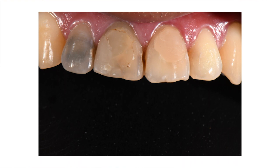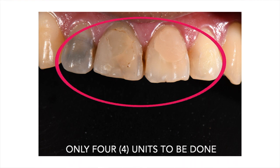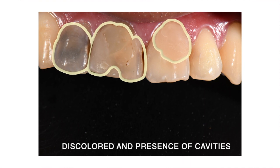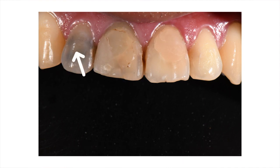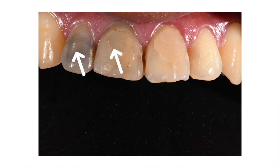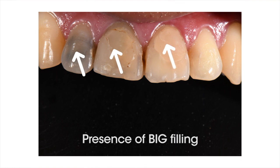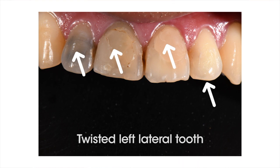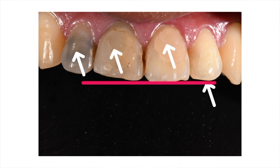We are only doing four units for this case. As you can see, it is super discolored with cavities present in this area. On the central incisors there is a huge filling — it has been filled or restored a few times but it doesn't last. On the upper left central incisor there is a big filling as well because it had cavities before, and on the left lateral tooth it has been twisted, so it looks flat — not an indication of good aesthetics.